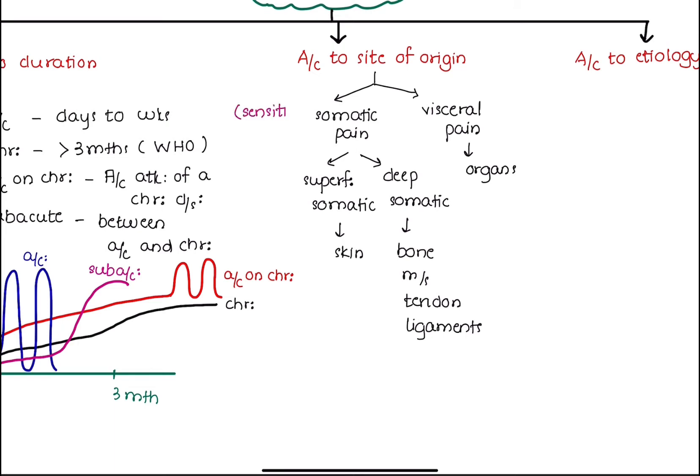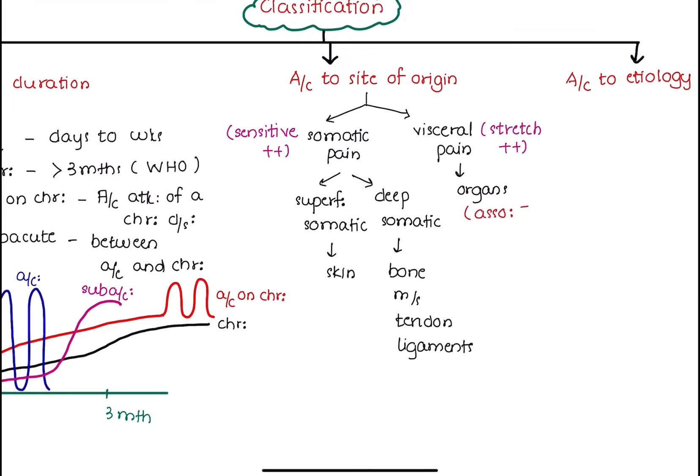Somatic pain is sharp, well-defined, and more sensitive to pain due to the abundance of pain receptors present on the skin. On the other hand, visceral pain is dull, aching, poorly localized pain, and may be accompanied by symptoms like nausea and vomiting.